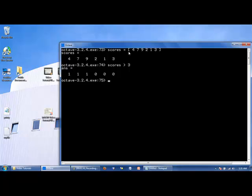The first three, 4, 7, and 9, are greater than 3. The last three, 2, 1, 3, are not.